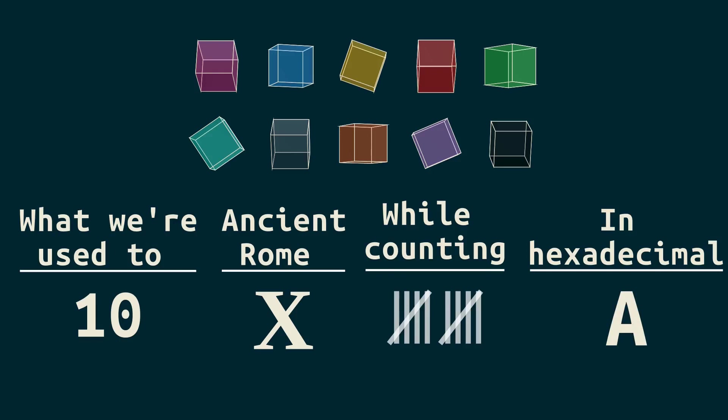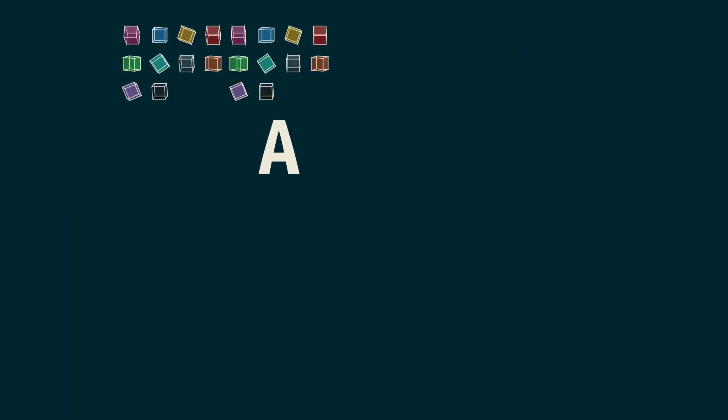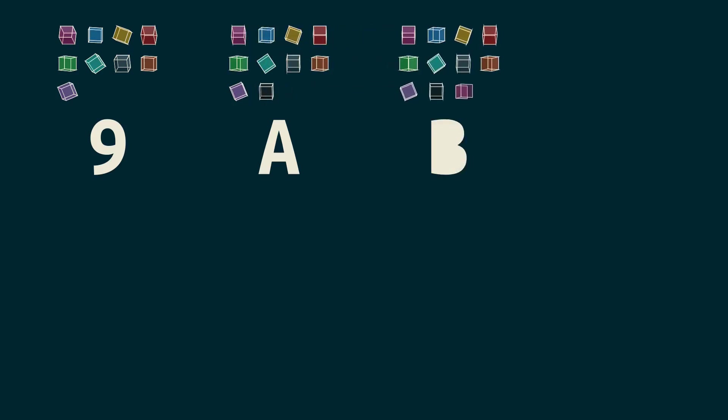Why A? Well, why not? It's already on the keyboard, and we know it already. Why complicate things with a new symbol? To write 9, it's the same as what we're used to. But what if I take 10, or A, and add one more to it? Then it's B.